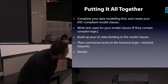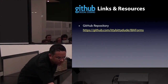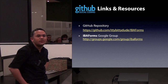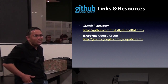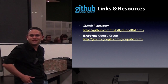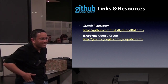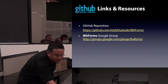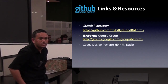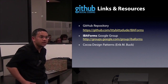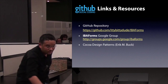IBA Forms is available on GitHub, and there's a Google Group — if you have any problems with the library or want to discuss extensions, jump on the Google Group. Sean has been very helpful, and I'm happy to help out too. I also recommend reading the Cocoa Design Patterns book, which will give you a better understanding of how this library is put together.